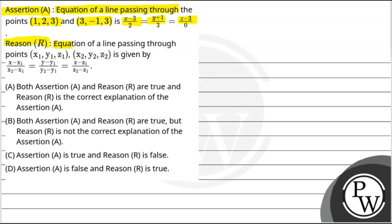Reason R: The equation of a line passing through points (x₁,y₁,z₁) and (x₂,y₂,z₂) is given by (x-x₁)/(x₂-x₁) = (y-y₁)/(y₂-y₁) = (z-z₁)/(z₂-z₁).